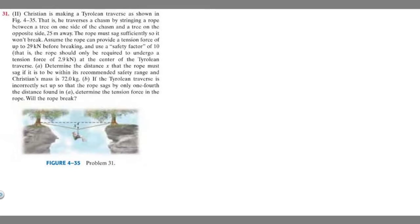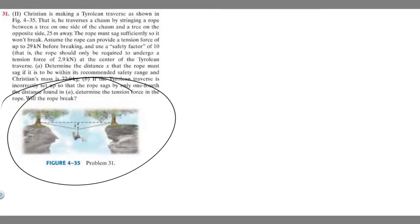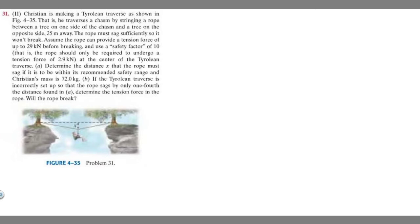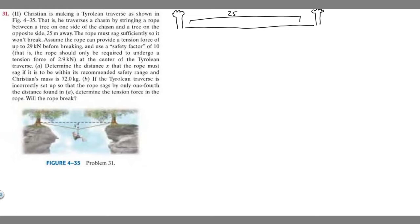The first thing we want to do is draw what's going on. We know this distance is going to be 25 meters, because they say from one tree to the other is 25 meters. So here's one of our trees, and we know it's going to go a distance of 25 meters to the other tree. We've got this rope hanging from both sides, holding this person up.